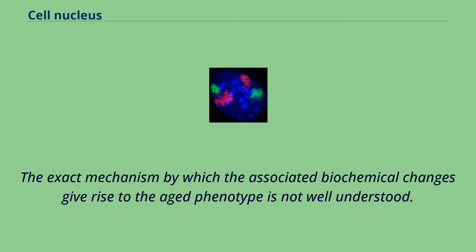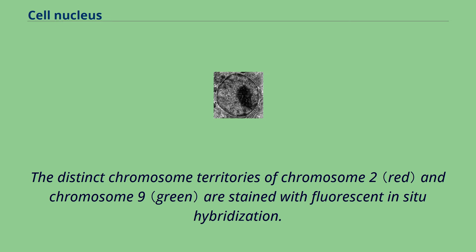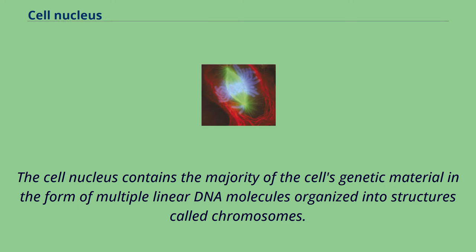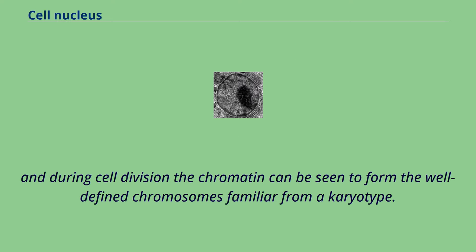A mouse fibroblast nucleus in which DNA is stained blue. The distinct chromosome territories of chromosome 2 and chromosome 9 are stained with fluorescent in situ hybridization. The cell nucleus contains the majority of the cell's genetic material in the form of multiple linear DNA molecules organized into structures called chromosomes. Each human cell contains roughly 2 meters of DNA. During most of the cell cycle these are organized in a DNA-protein complex known as chromatin, and during cell division the chromatin can be seen to form the well-defined chromosomes familiar from a karyotype.